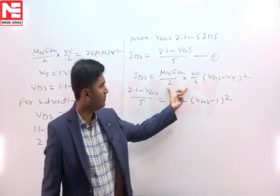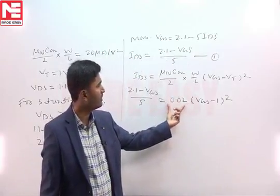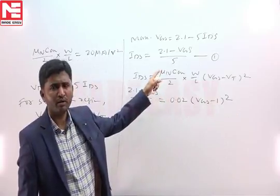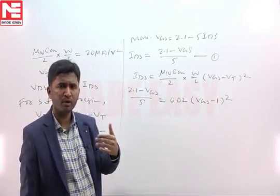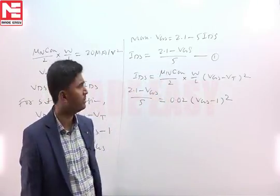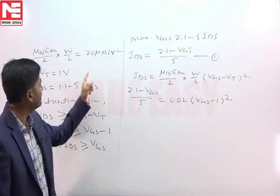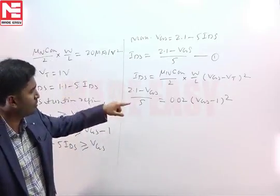I wrote this parameter in milliampere here because we have taken resistor in kilo ohm. Whenever we take resistor in kilo ohm, you try to write current value in milliampere. That parameter was given in micro, I converted that into milli, 0.02 milli.